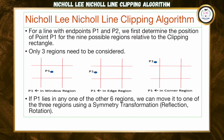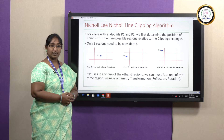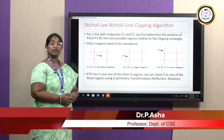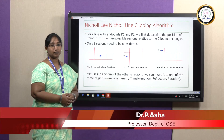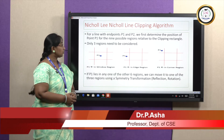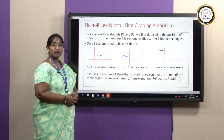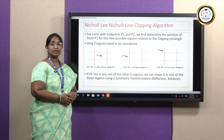We have already discussed what a line clipping algorithm is. In line clipping there are three different types: the Cohen-Sutherland line clipping algorithm, the Liang-Barsky line clipping algorithm, and the Nicol-Lee line clipping algorithm. This Nicol-Lee line clipping algorithm depends on interior clipping.